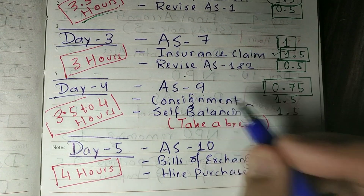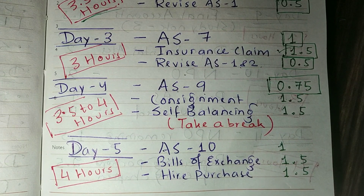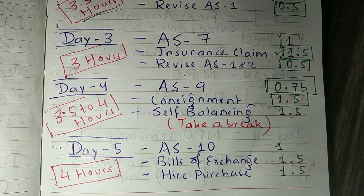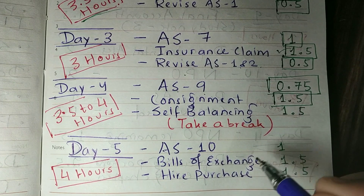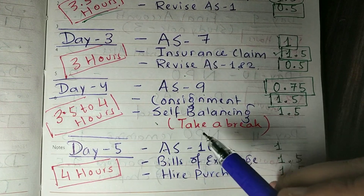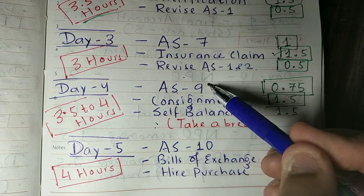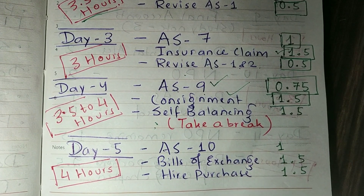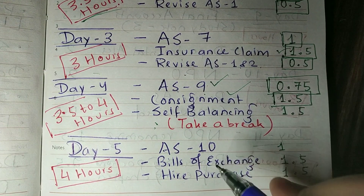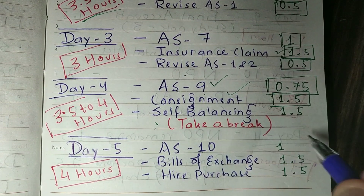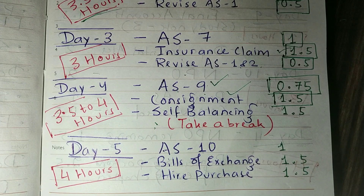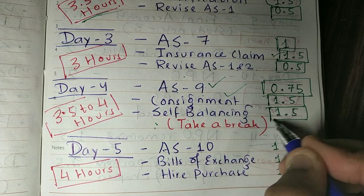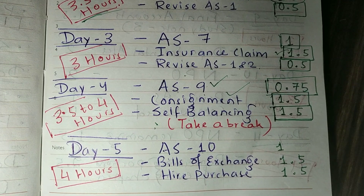After AS-9 on Day 4, you have to learn Consignment. Practice 1–2 questions in format and then practice roughly using a calculator and rough paper — that will be 1.5 hours. Then you have to learn Self-Balancing Ledger. AS-9 and Consignment are both conceptual, so take a little break before studying Self-Balancing Ledger. Any questions in Self-Balancing Ledger will take 1.5 to 2 hours.